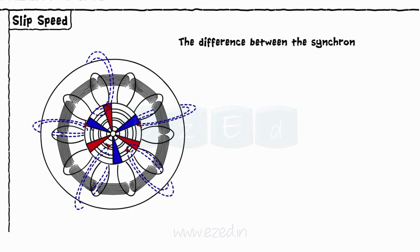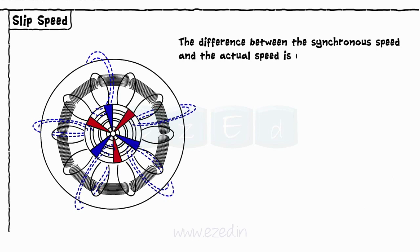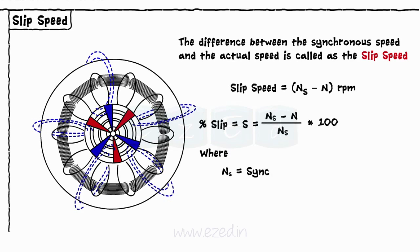The difference between the synchronous speed and the actual speed is called the slip speed. It is given as percentage slip equals ns minus n upon ns into 100, where ns equals synchronous speed and n equals actual rotation speed of motor measured in rotations per minute.